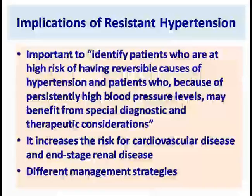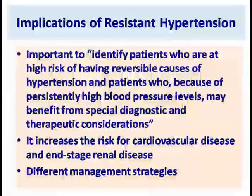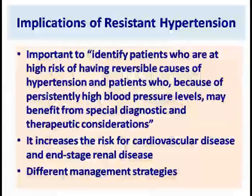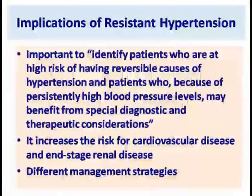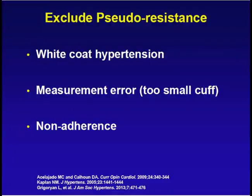What are the implications of resistant hypertension? It is important to identify patients who are at risk, because these patients are at risk for blood pressure-related complications. They can have a greater incidence of cardiovascular disease and also a greater incidence of renal disease, and there are different management strategies for this particular type of blood pressure.